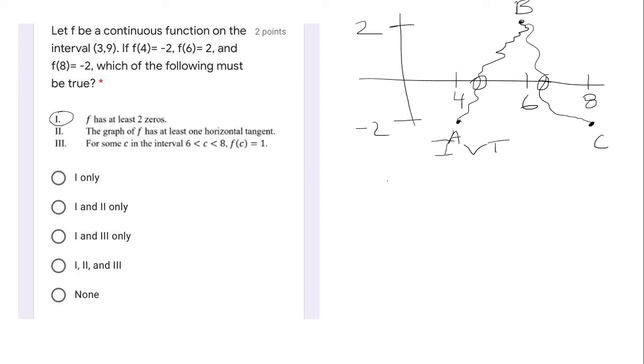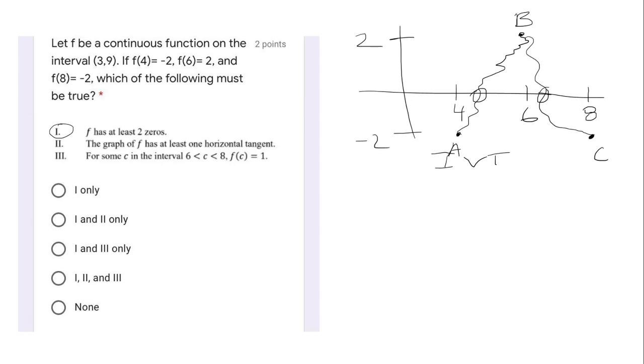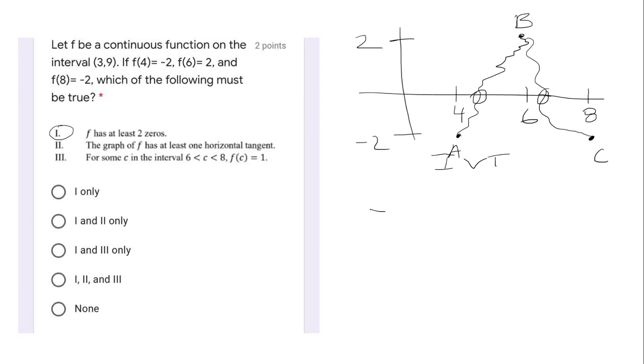The second one, the graph of f has at least one horizontal tangent. Okay, so this is a fancy way of saying that the derivative is zero. Another way to think about this is Rolle's theorem.